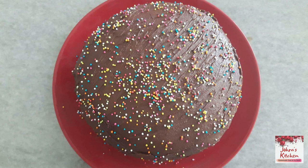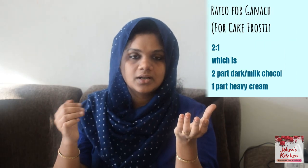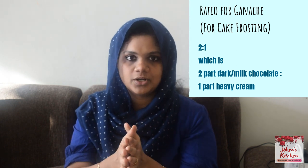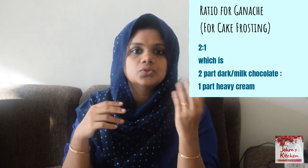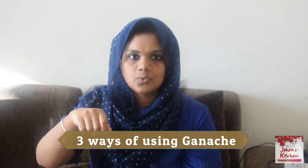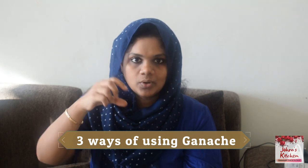With the 1:1 ganache ratio, you can use it for ice cream, cheesecake, pie, and toppings. If you want to make a frosting for cake, you use a 2:1 ratio — 2 chocolate to 1 heavy whipping cream. Once you have a pouring consistency, you can set the cake.